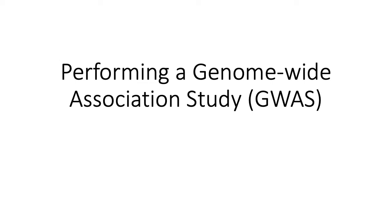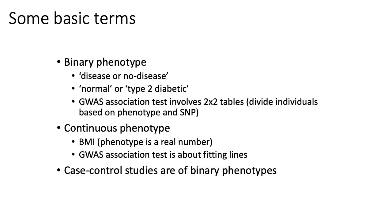Now we'll discuss, at a conceptual level, how genome-wide association studies are conducted. Some basic terms and dichotomies relevant to genome-wide association studies are needed here. When you perform a GWAS to identify SNPs associated with some phenotype, how you perform those analyses depends on what your phenotype or trait looks like.